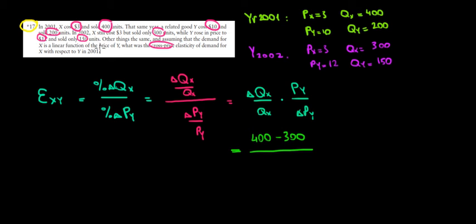We're looking for the elasticity in 2001, meaning that the quantity that we're using is for 2001, which is equal to 400 units. So the quantity of X is equal to 400 units, times what is the price of Y in 2001? The price of Y in 2001 is equal to 10. And then what is the change in the price of Y? It's from 10 to 12, so 10 minus 12. Meaning that in 2001 the price was 2 units lower.